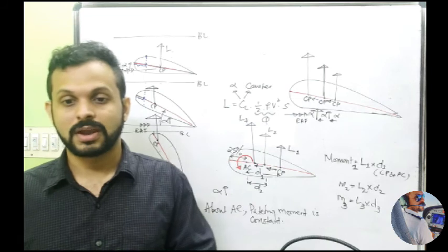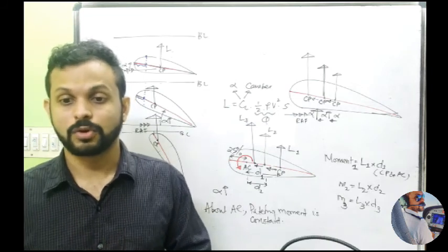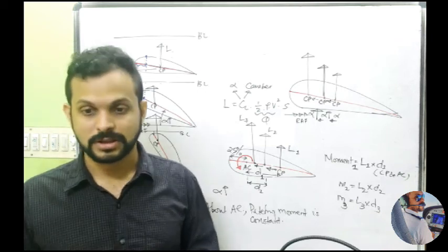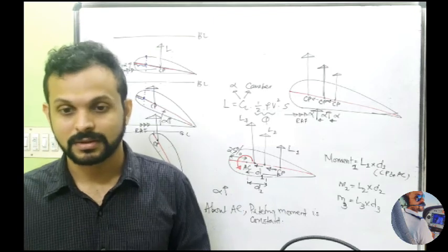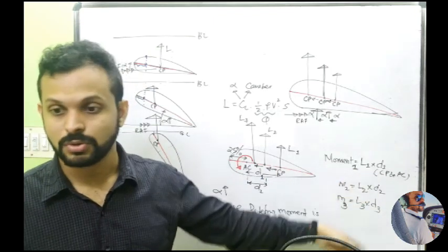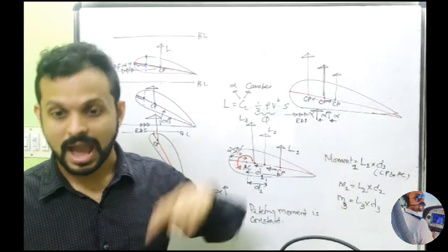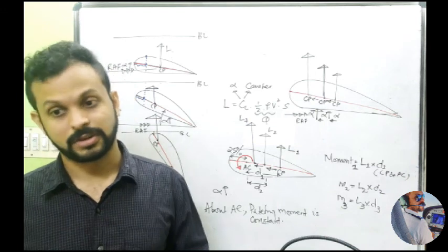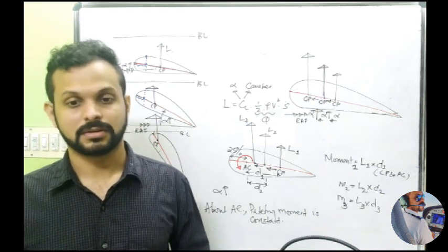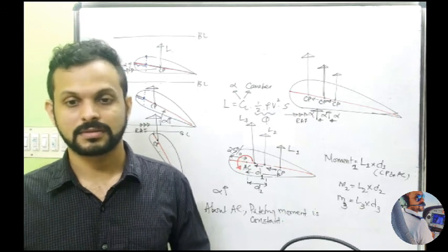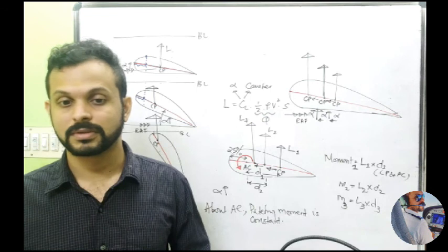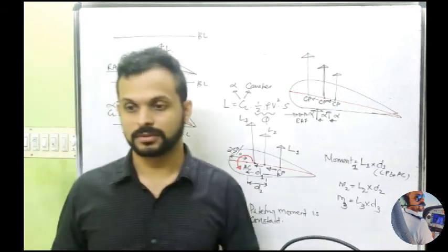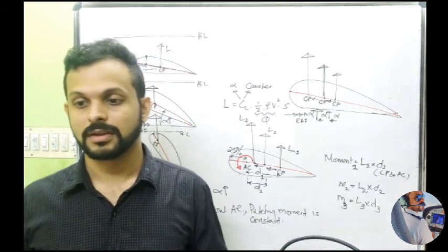The lift might change, the distance might change, but the product of lift and distance — the moment — is not changing, and that assumed point is the aerodynamic center. Aerodynamic center is located at approximately 25 percent of the chord. The moment about the aerodynamic center is the product of the distance between the aerodynamic center and the center of pressure, and the magnitude of the corresponding lift force acting from the CP. So the answer: statements two, three, and four are correct — the first one is wrong because it's nose-down tendency, not nose-up.